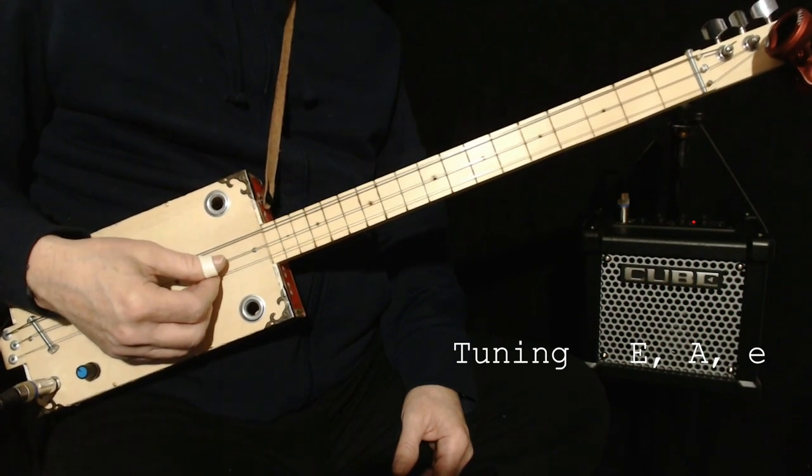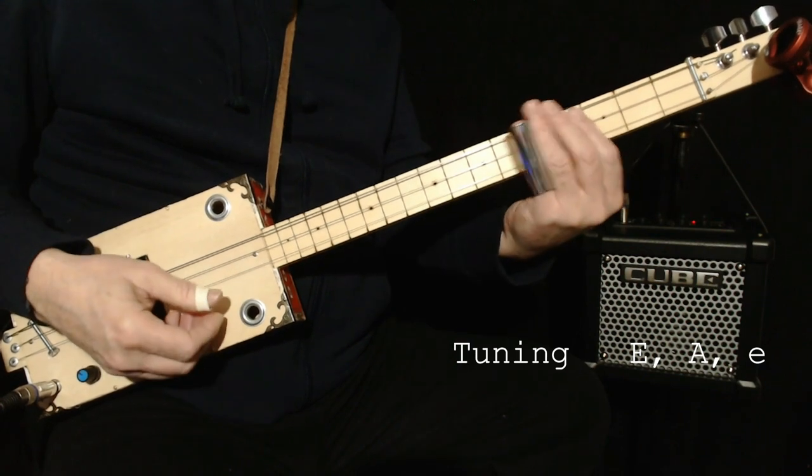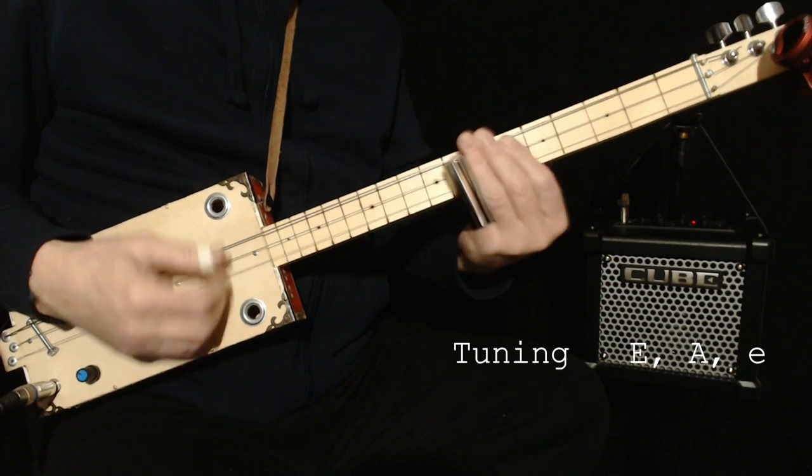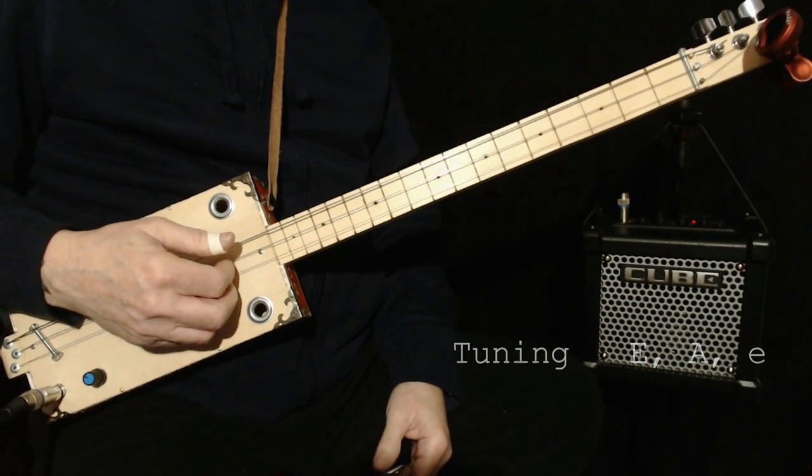Your IV chord, D, is on the 5th fret. Your V chord, E, is on the 7th fret. That's all I need as far as chords go to play the song.